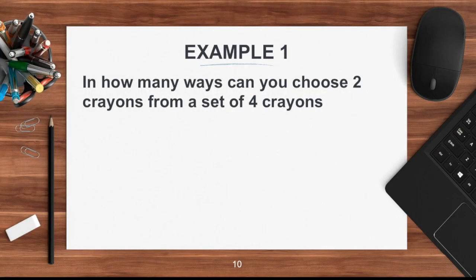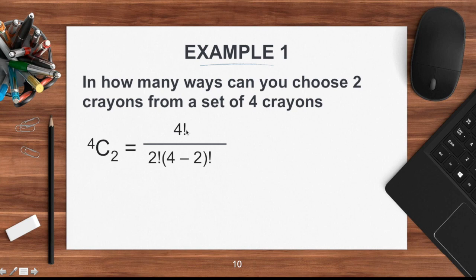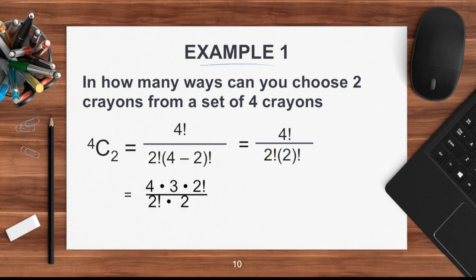Example one: In how many ways can you choose two crayons from a set of four crayons? Our n is four and r is two. Using the formula: four factorial divided by two factorial times two factorial. Expanding and simplifying gives us six.